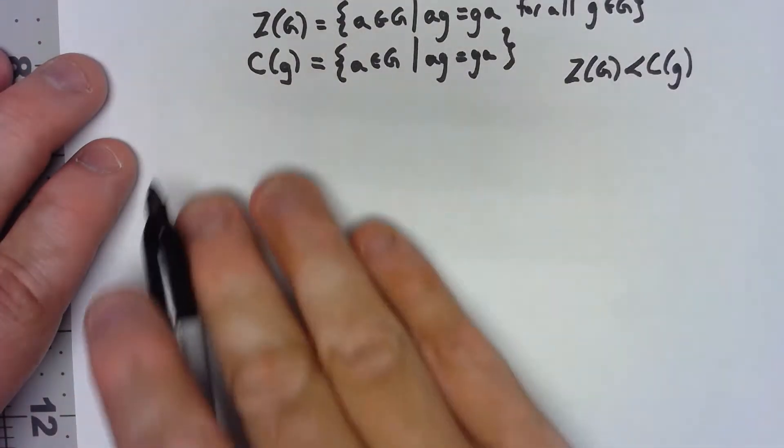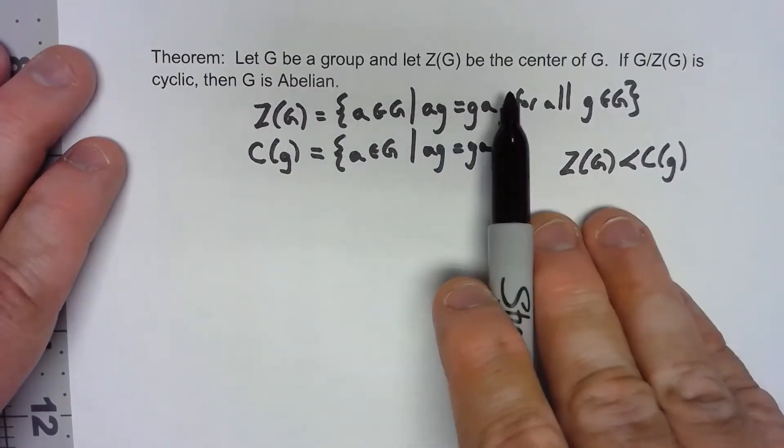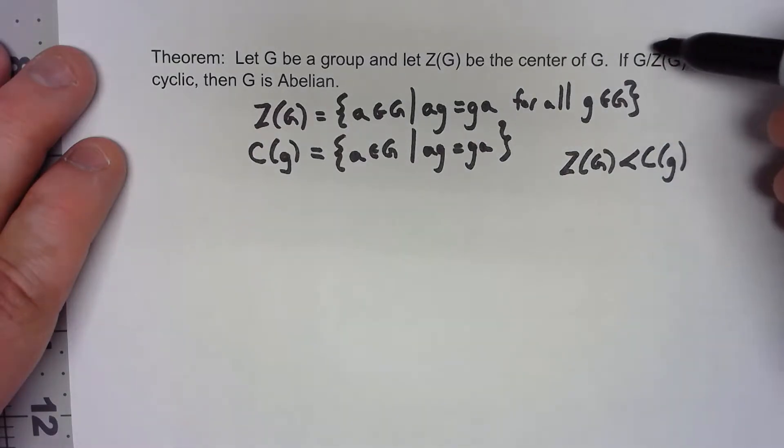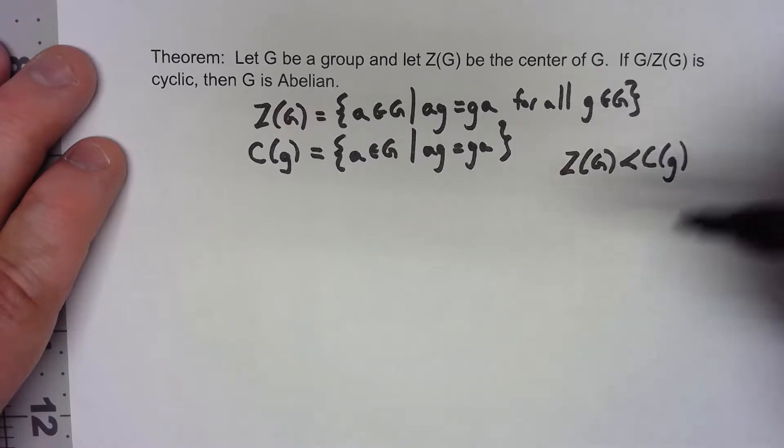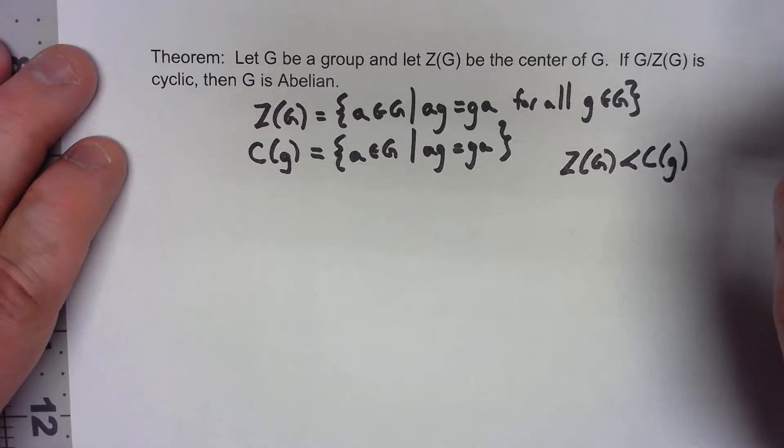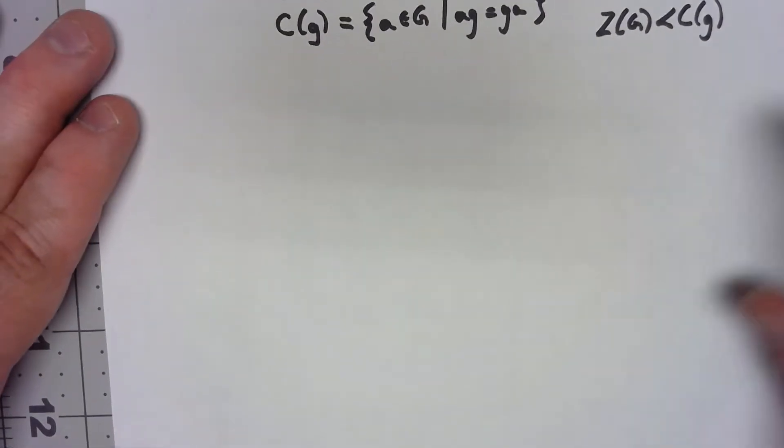So back to the theorem. What we're saying is that if we've got a group and we got the center of G, if that factor group G mod Z(G) is a cyclic group, then the group G needs to be abelian. That isn't at all obvious so let's start breaking it down.